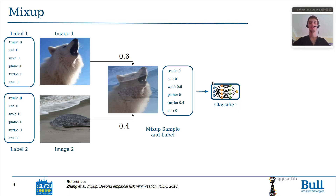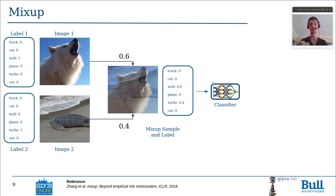MixUp is a well-known data augmentation procedure that consists in interpolating images of the training set and their associated labels, and training a classifier on the interpolated images and labels. It has been shown that a classifier trained with MixUp has a higher clean accuracy than a classifier trained without it, is more robust to common corruptions, and is more robust to label corruptions.